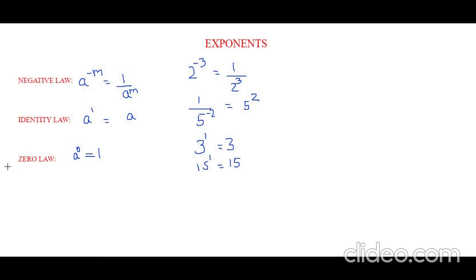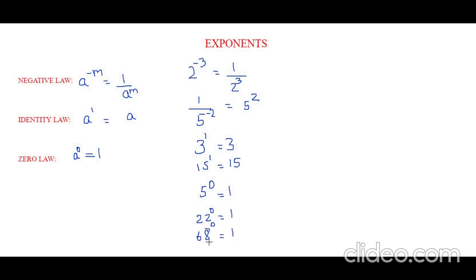Now let's learn the next law, which is the zero law. It states that a to the power of 0 is equal to 1, meaning anything to the power of 0 is 1. For example, 5 to the power of 0 can be written as 1. 22 to the power of 0 is also 1. You can even write 68 to the power of 0 is 1. So, anything to the power of 0 is always 1.